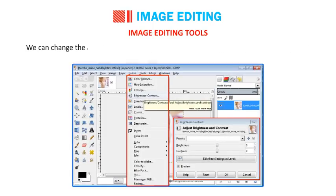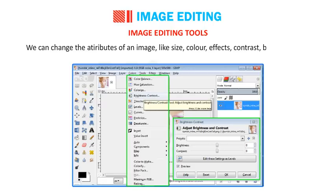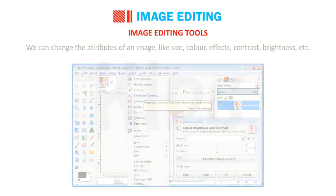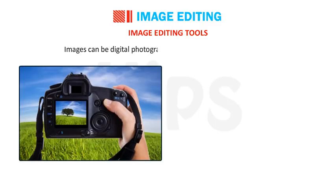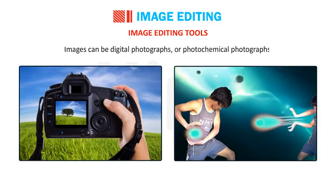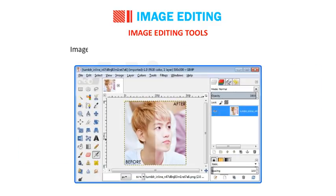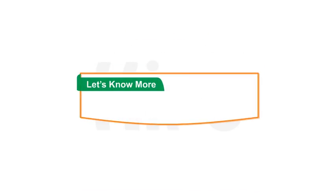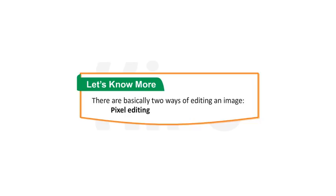We can change the attributes of an image like size, color, effects, contrast, brightness, etc. Images can be digital photographs or photochemical photographs. Image editing tool is also referred to as photo editing software. There are basically two ways of editing an image – Pixel Editing and Parametric Editing.